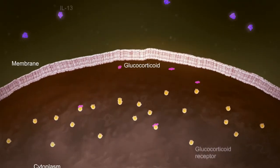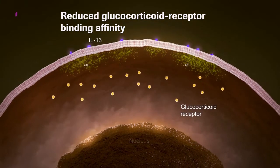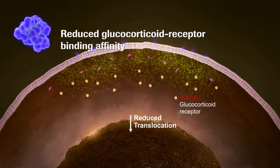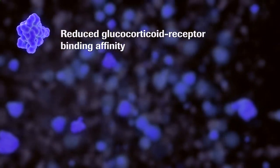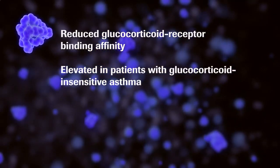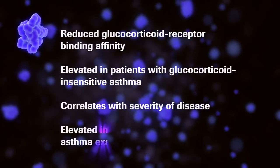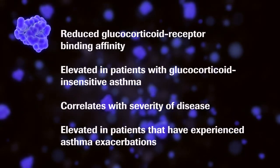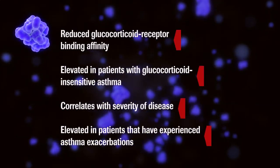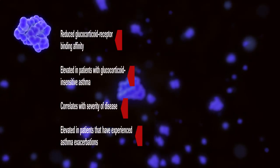IL-13 also plays a key role in reduced glucocorticoid receptor binding affinity and blocking glucocorticoid receptor translocation to the nucleus. IL-13 is elevated in patients with glucocorticoid-insensitive asthma, correlates with severity of disease and can also be elevated in patients that have experienced asthma exacerbations. Therefore, IL-13 blockade is an attractive therapeutic approach for the treatment of bronchial asthma.